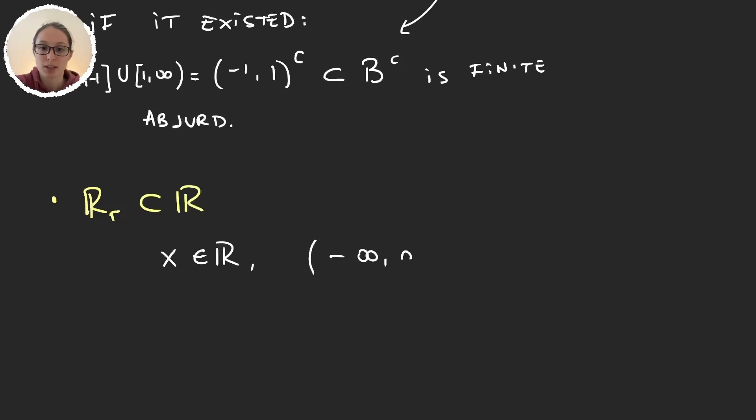So take minus infinity a, some set, in the ray topology, such that minus infinity a contains x. This means that a is, again, greater than x. So let's make the drawing again. Now, if I grab here my x, my neighborhood of x in the ray topology has to be something like this.